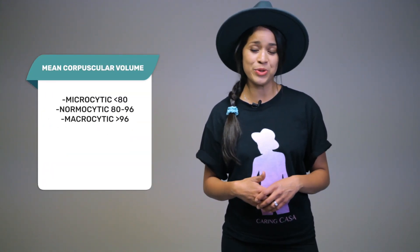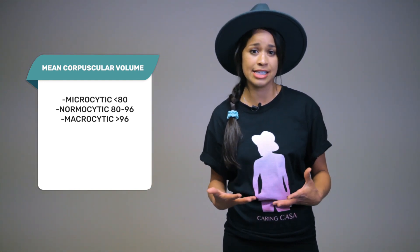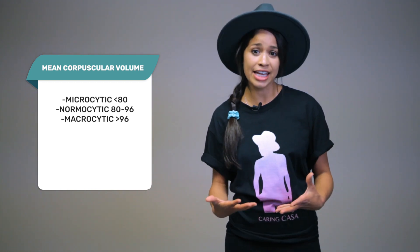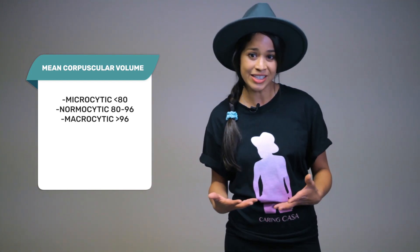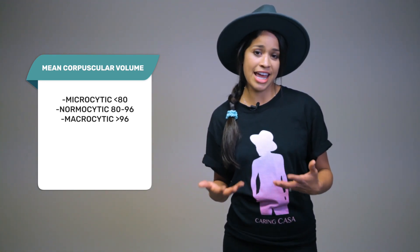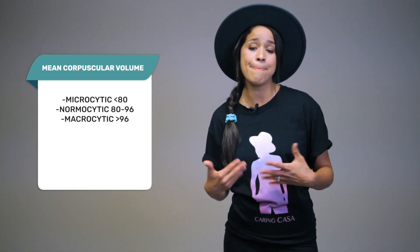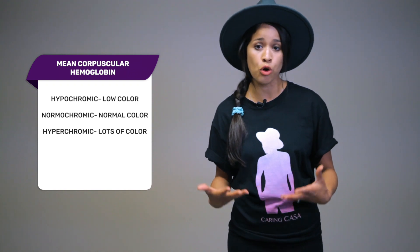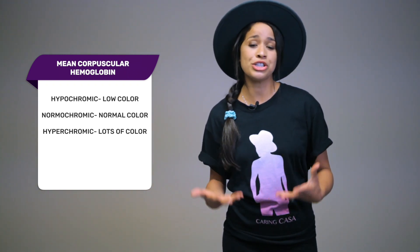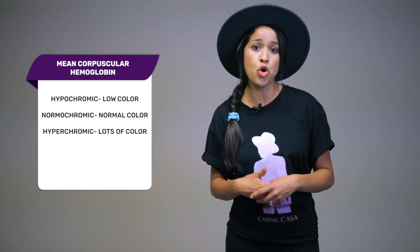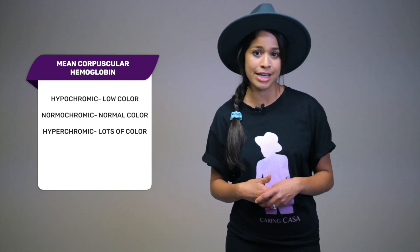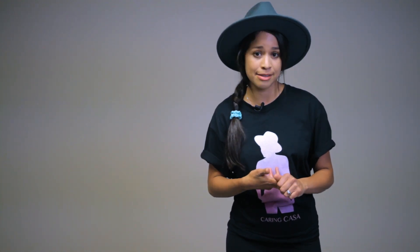For MCV — which is size — microcytic means small cell and is defined as a lab value less than 80. Normocytic is normal size and falls between 80 to 96. Macrocytic is a large cell, greater than 96. For MCH — which is color — hypochromic means low color, normochromic is normal color, and hyperchromic is a high amount of color. A microcytic hypochromic anemia includes iron deficiency anemia and thalassemia.